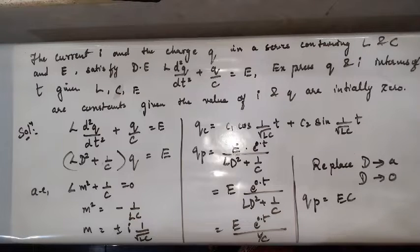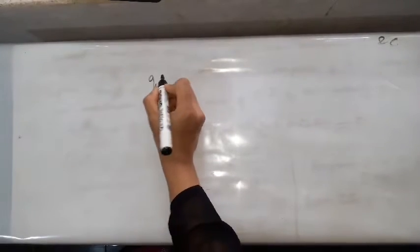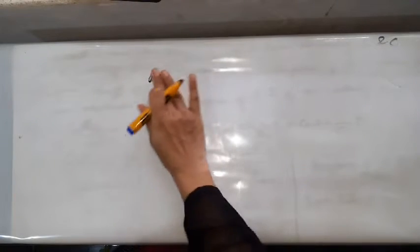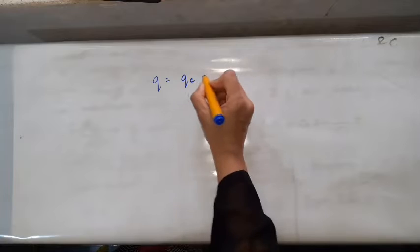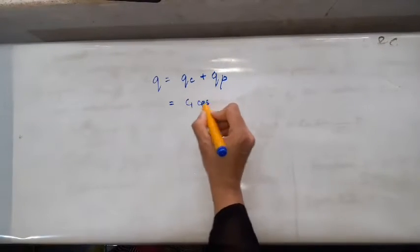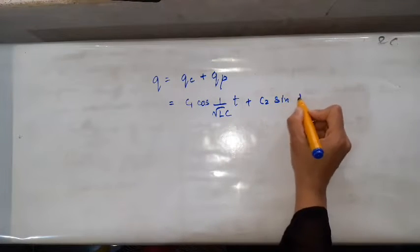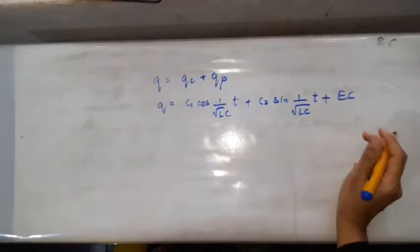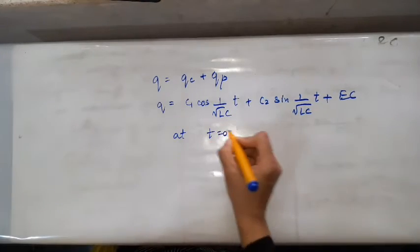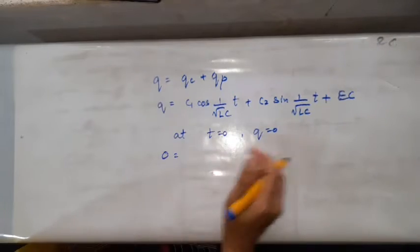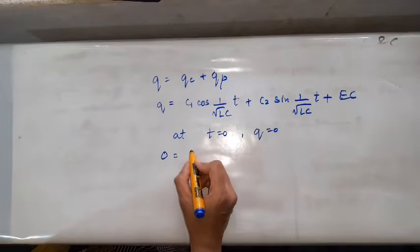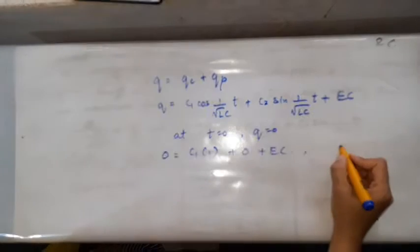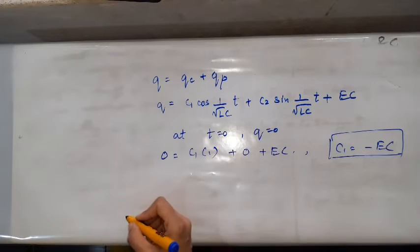The general solution is q = q_c + q_p = c₁ cos(t/√LC) + c₂ sin(t/√LC) + EC. Applying the initial condition q(0) = 0: cos(0) = 1 and sin(0) = 0, so 0 = c₁ + EC, giving c₁ = −EC.